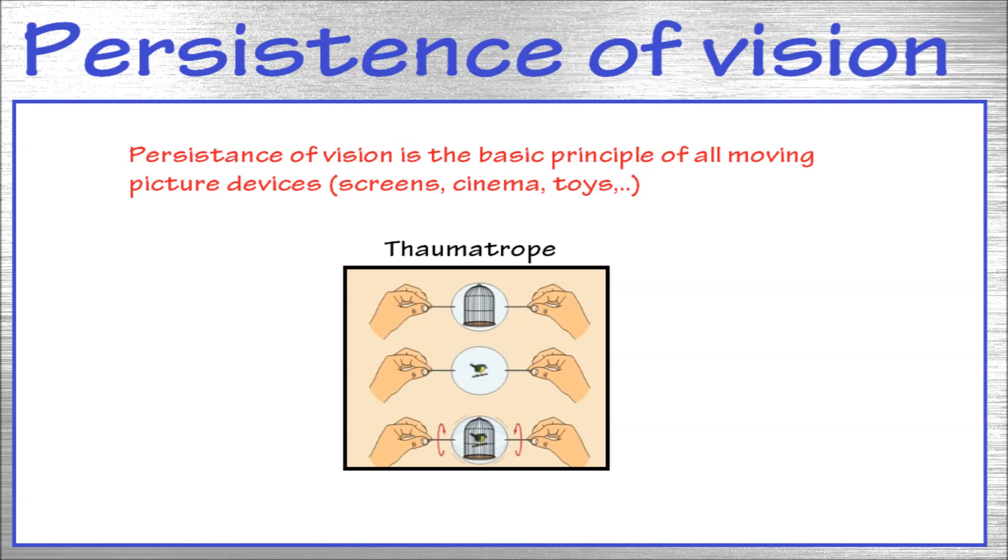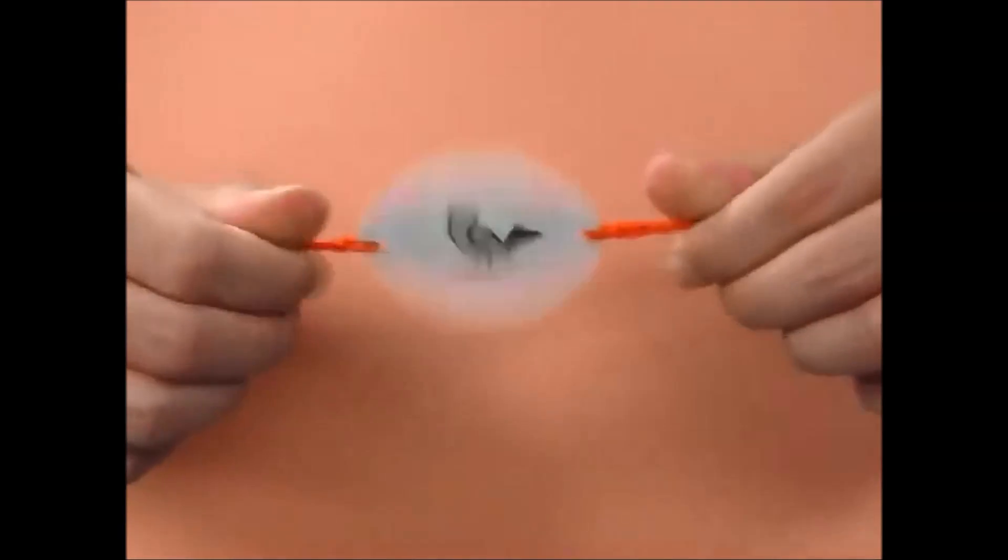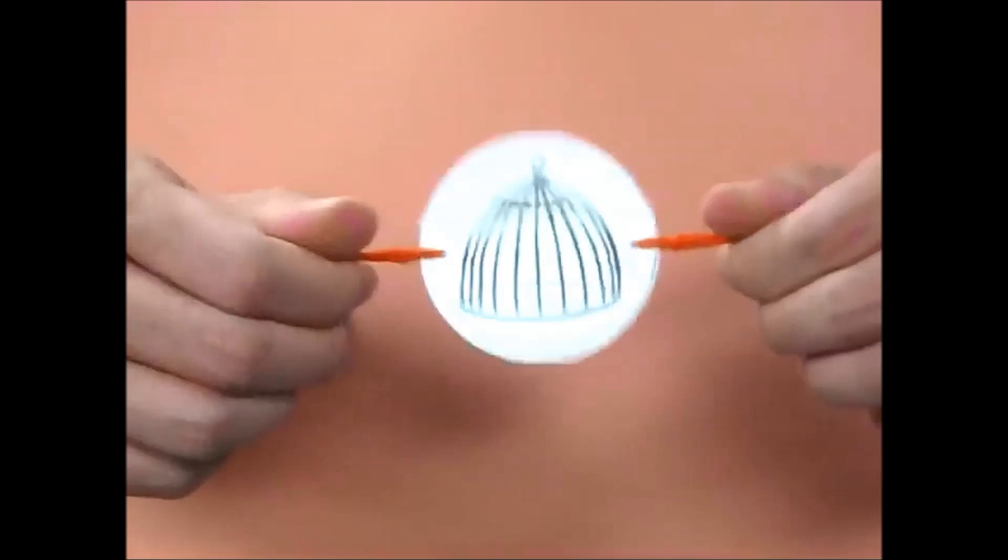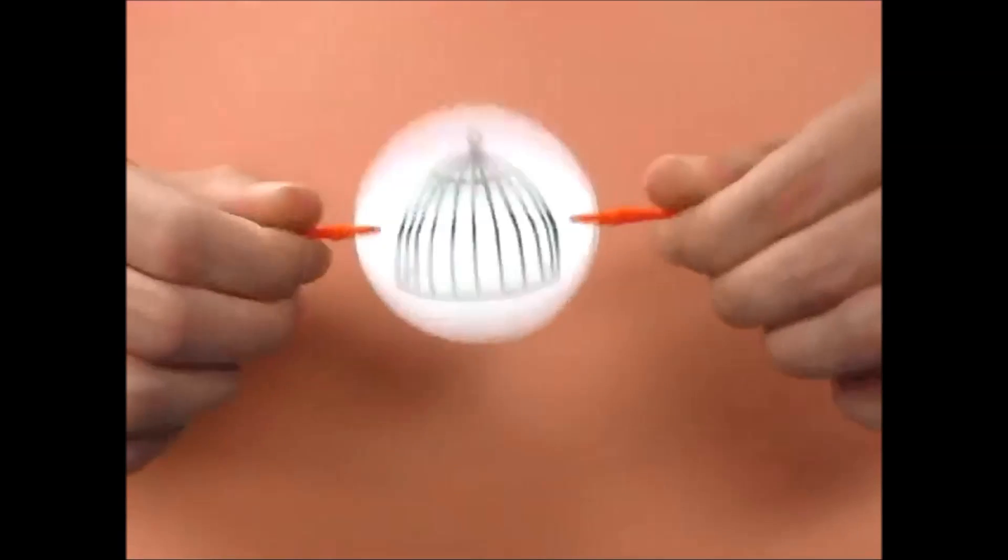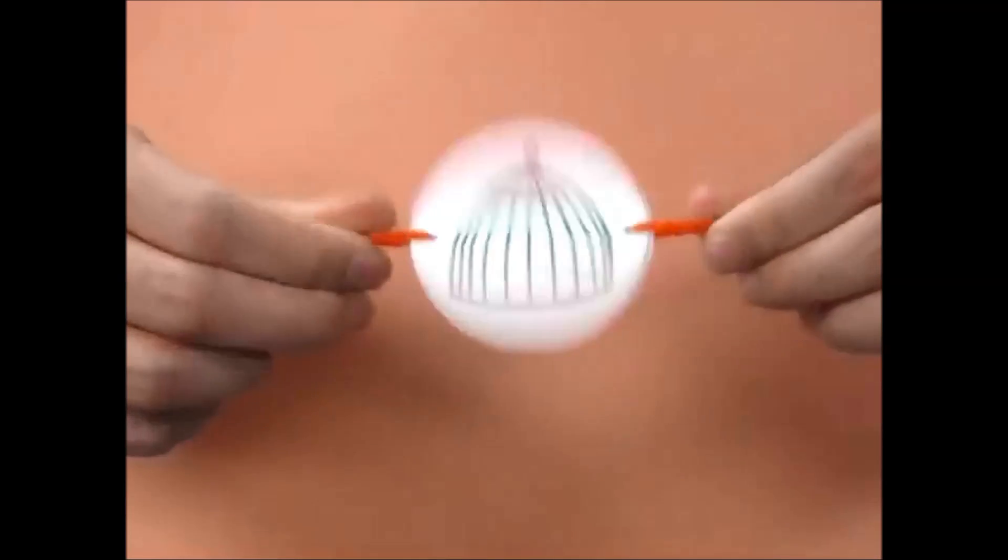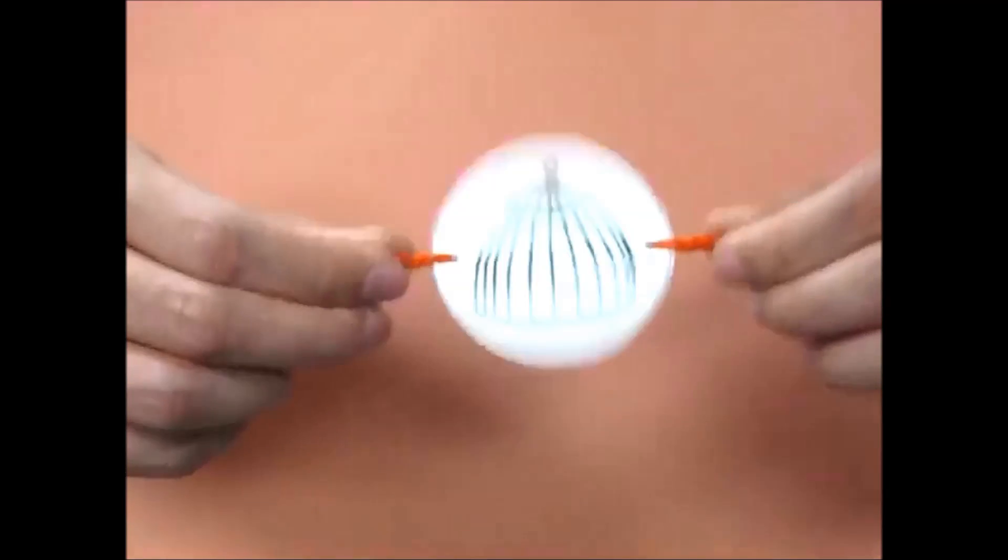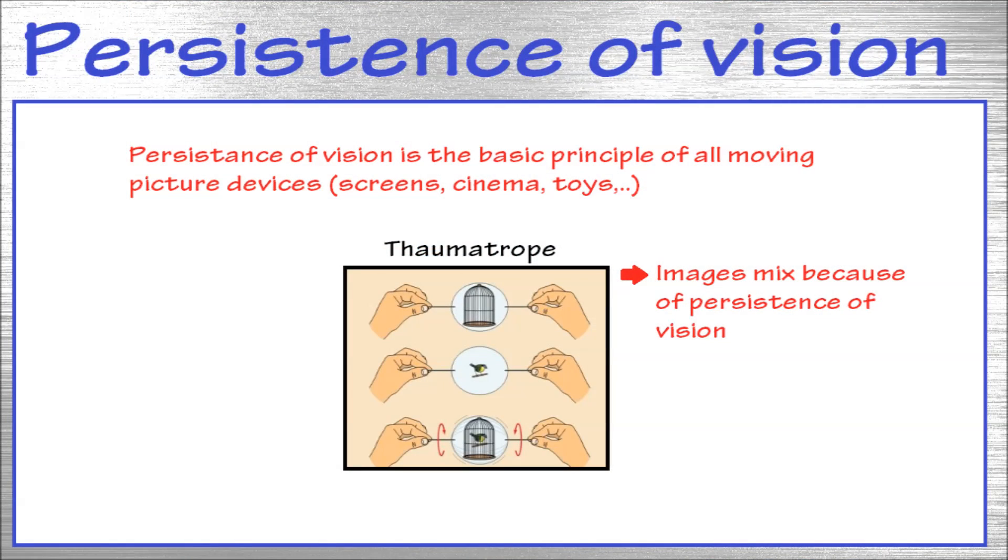A good example is a thaumatrope. When the disc spins fast enough, the bird appears to be in the cage. The image of the cage is still on the eye when the image of the bird is projected. This is the basic principle of all screens.